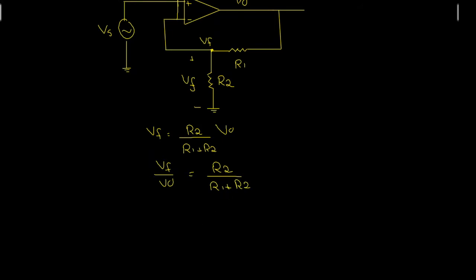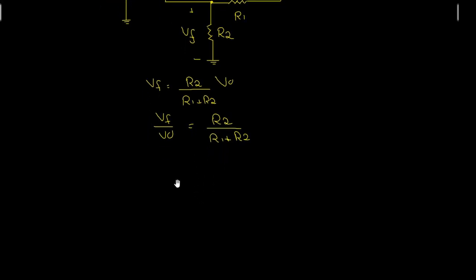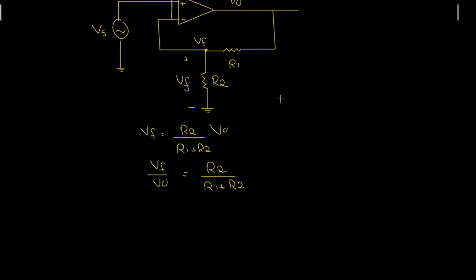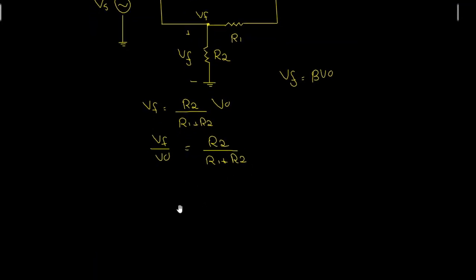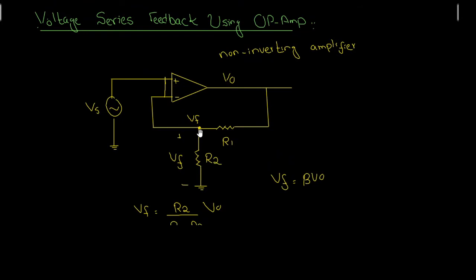This Vf/V0 is actually my beta, because Vf is equal to beta times V0 — a sample of the output signal is taken and applied to the input. So beta = R2 divided by (R1 + R2). This is equation A. That was the circuit of voltage series feedback using the operational amplifier.